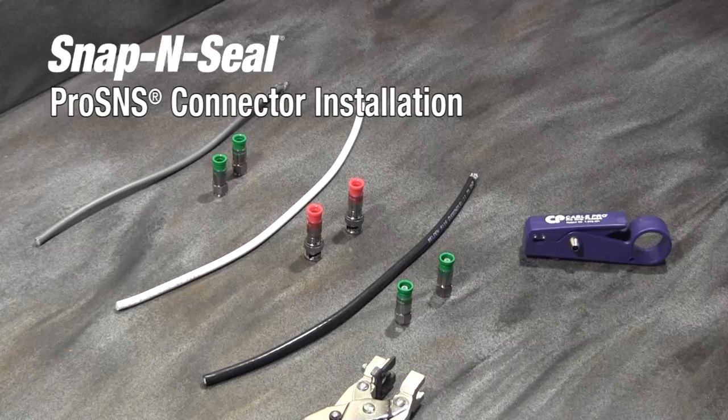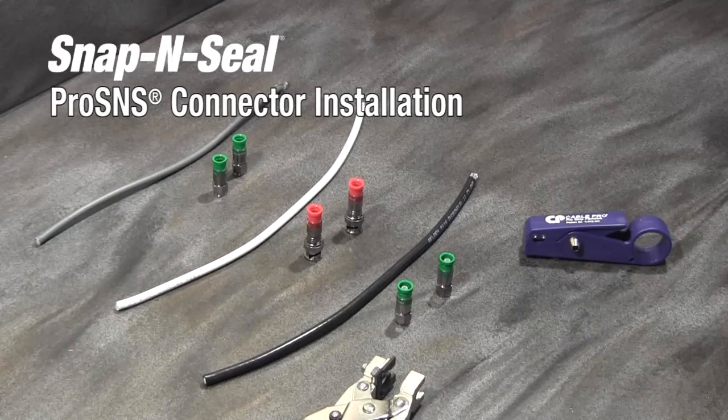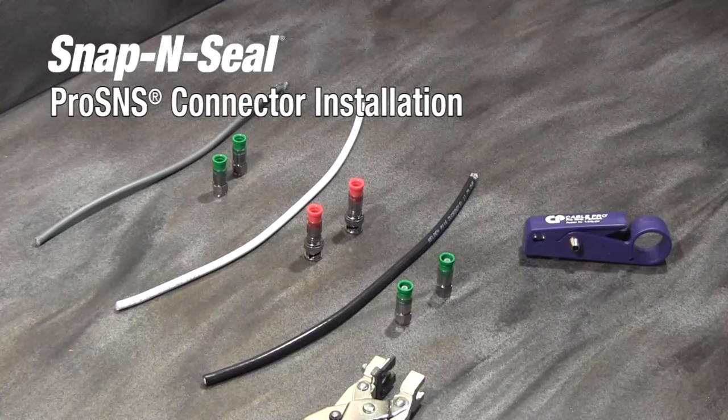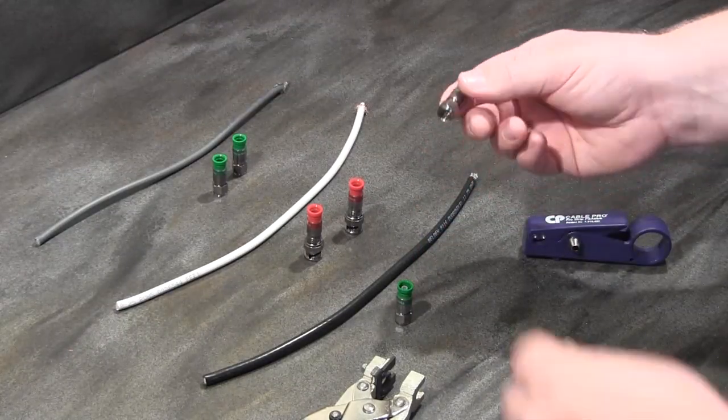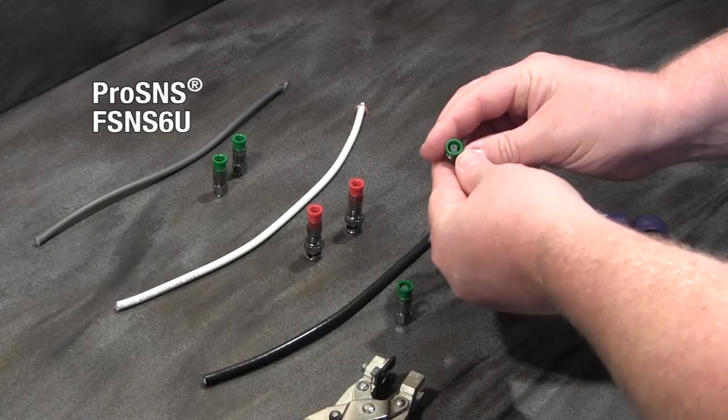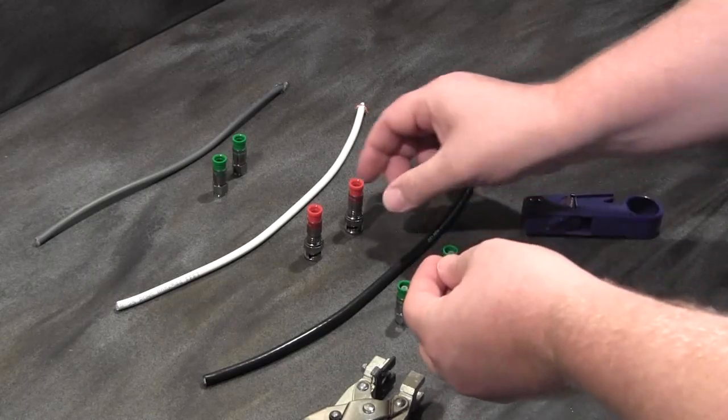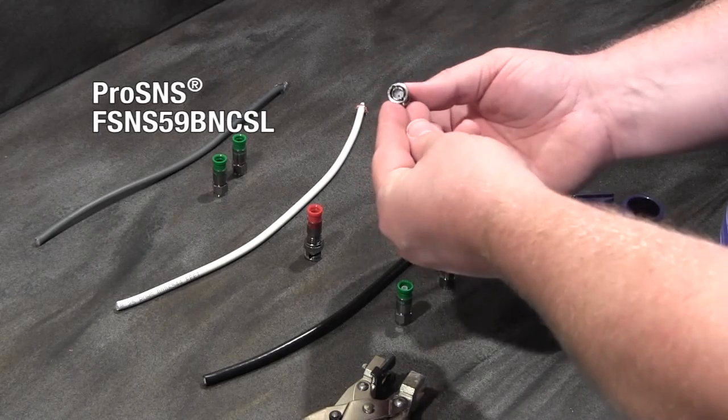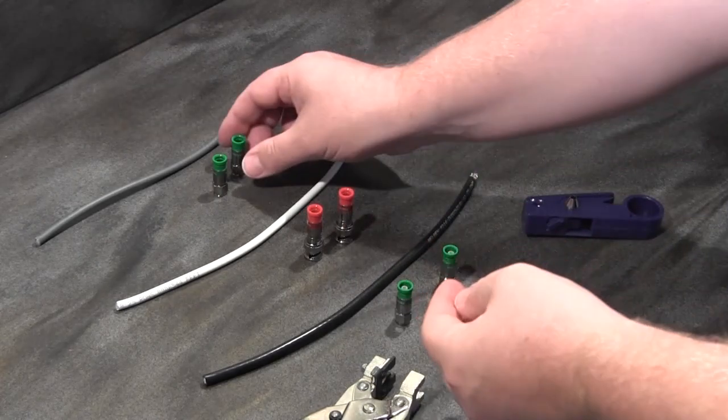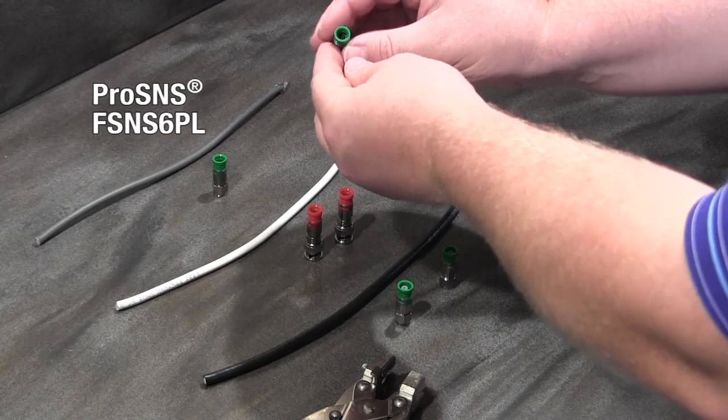In this video, I'll show you the termination instructions and several key features from our new Pro S&S Snap and Seal Connector Family, including the universal F-connector, a security BNC connector, CCTV cameras, and a plenum F-connector.